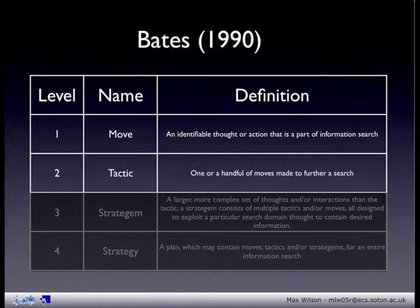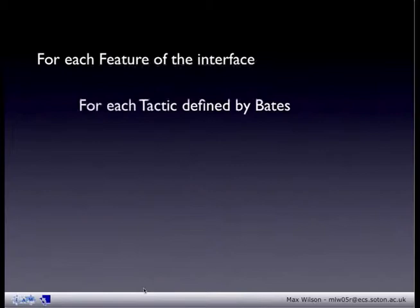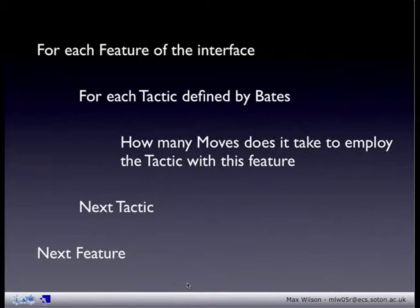Using these two measures, we can follow a very simple process: for every feature of the interface, for each tactic defined by Bates, count how many moves it takes to perform that tactic with that feature, then move on to the next tactic, and once you've done all the tactics, move on to the next feature.